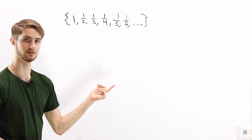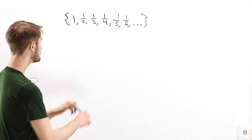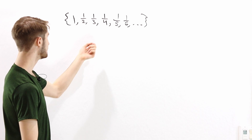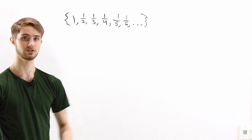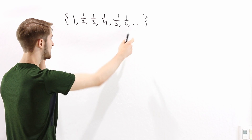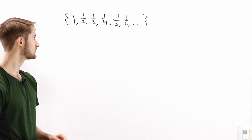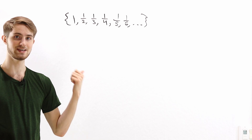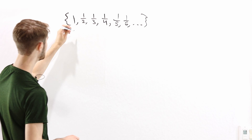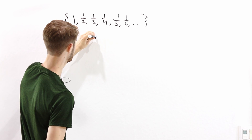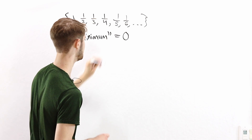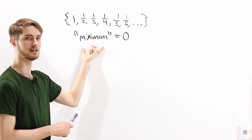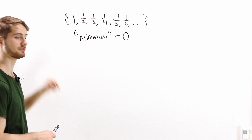Now, what is the minimum of this set? Well, all of these numbers are bigger than 0, and they're going to get really, really close to 0. But none of these numbers actually equals 0. So we can't say that the minimum of this set is 0, because 0 isn't even in the set in the first place. But we really want to say that something like the minimum of this set is 0.